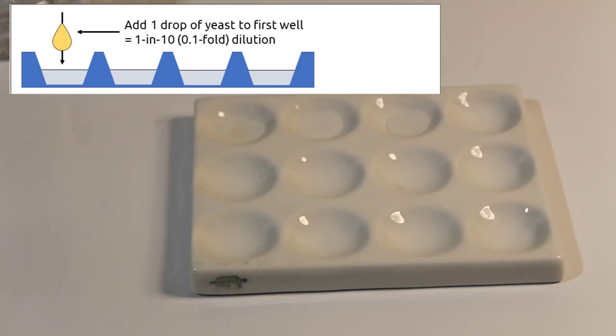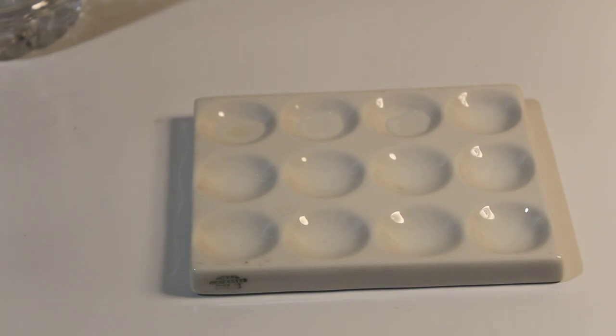Using either a clean pipette or a pipette that we've rinsed thoroughly, we can then mix that solution together, and we've now diluted our yeast one in ten. So it will be one tenth as dense as we had previously.